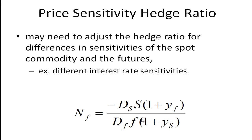The formula is then multiplied by the spot position times one plus the yield on the futures, divided by the futures times one plus the yield on the spot. For example, if the duration of the spot asset is 180 days and the duration of the futures contract is only 90 days, the spot position is going to be twice as sensitive to a change in interest rates as the futures contract, so you're going to need twice as many futures contracts.